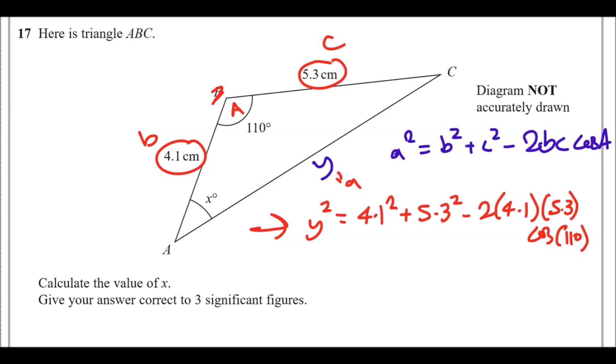It would be y squared equals b squared plus c squared minus 2 times b times c cos 110. By the way, these two are stuck, so you just multiply here. Now, putting this all in your calculator and square rooting it, because you've got y squared. To get y, you need to square root.